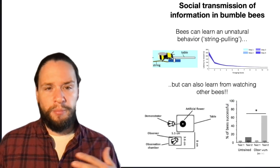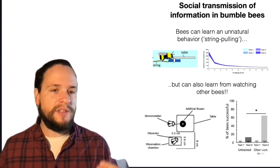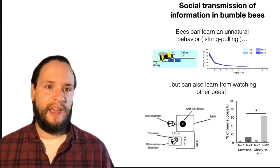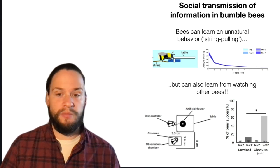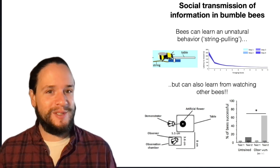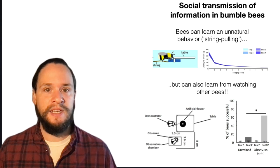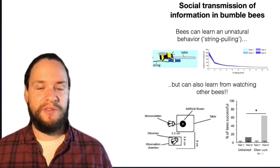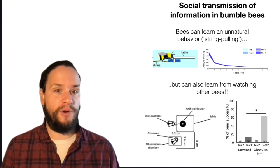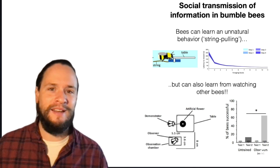Bumblebees are closely related to honeybees but sort of have a somewhat simpler social system. So instead of tens of thousands of workers in the colony, they have a few dozen up to a few hundred usually. But it turns out they still have some kinds of important social information transfer within colonies. So one of my favorite examples of this is the ability to learn and transfer strange and unnatural behaviors within a colony.